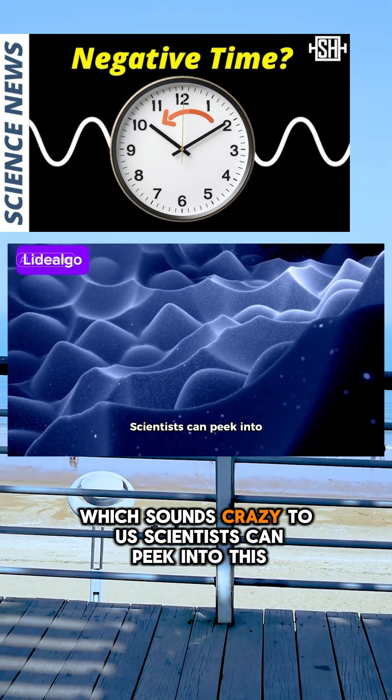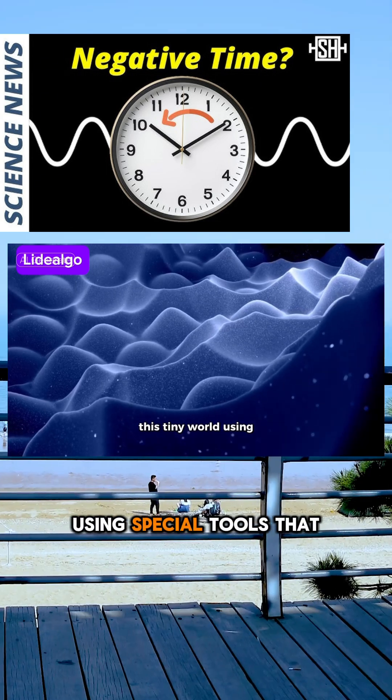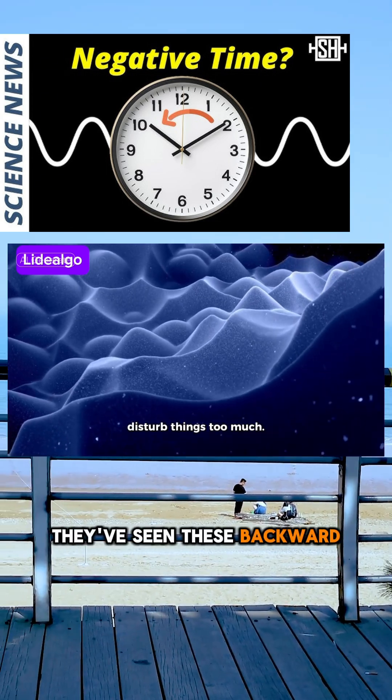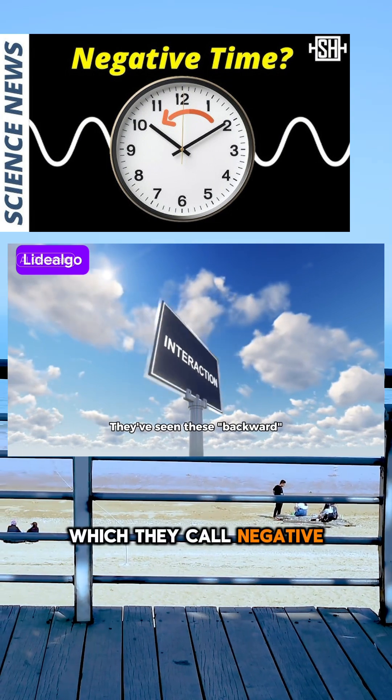Scientists can peek into this tiny world using special tools that don't disturb things too much. They've seen these backward interactions happen, which they call negative time.